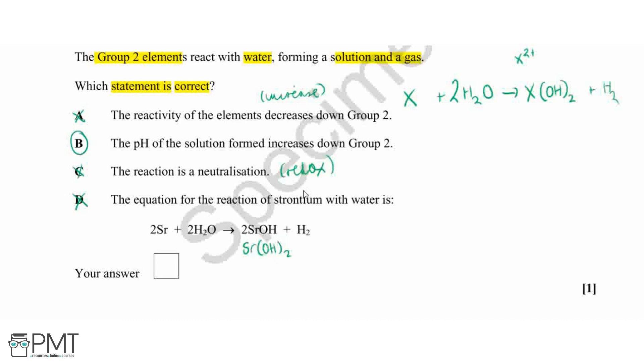Therefore our correct answer is B, and the reason why this is correct is because when we produce this hydroxide with our group 2 element.